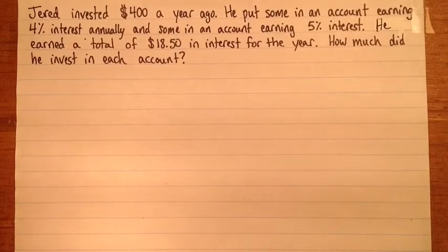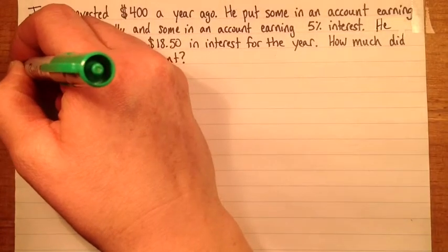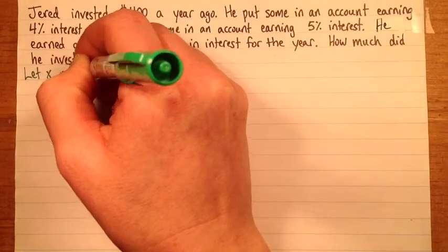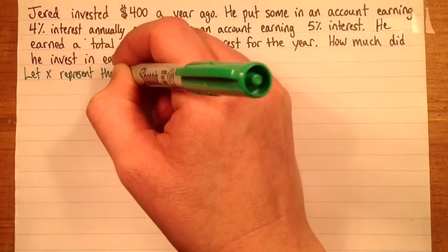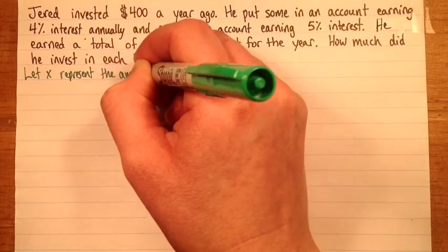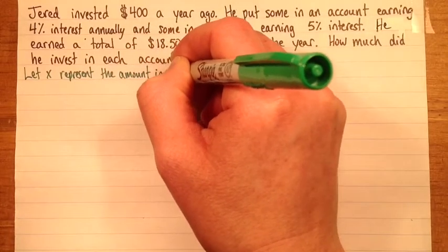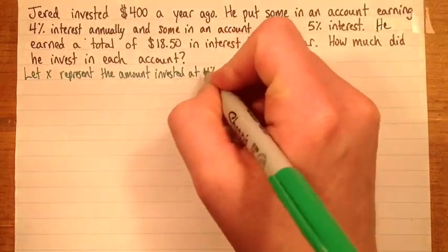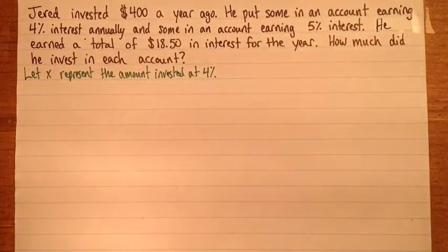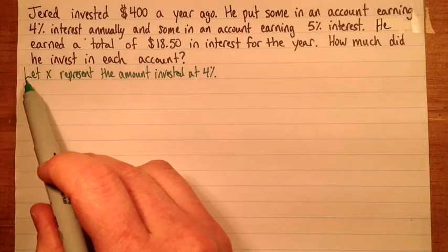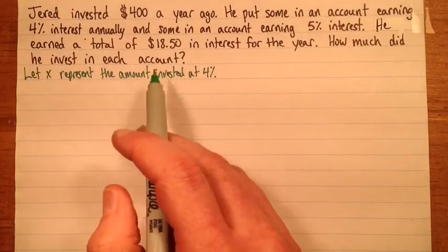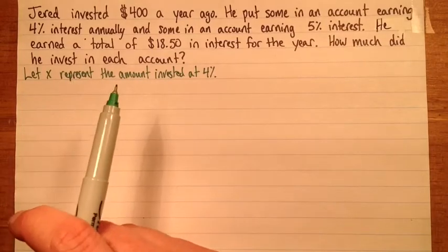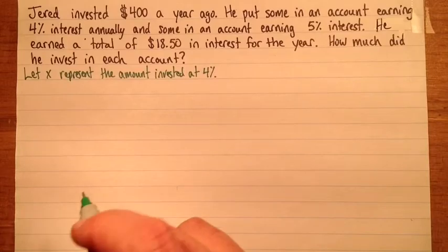So let's write this down. Let X represent the amount invested at 4%. That's something we say with interest, it's invested at 4%. So make sure you say let X represent, and then don't say let X represent 4%, say what we're talking about, we're talking about the amount of money that's invested at 4%.